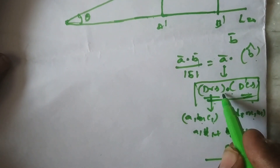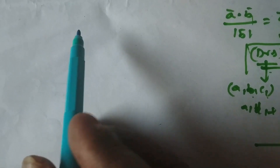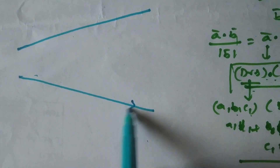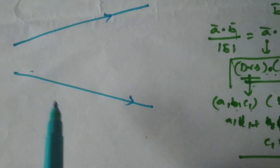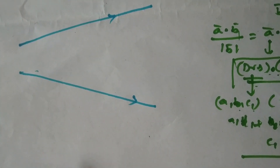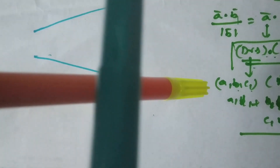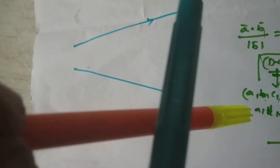With the help of the above concept, let us find the shortest distance between two skew lines. Skew lines are lines which are neither parallel nor intersecting. For example, two lines that do not intersect each other and are not parallel to each other are called skew lines.